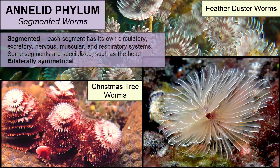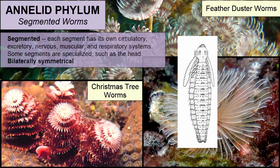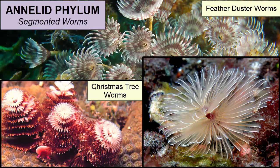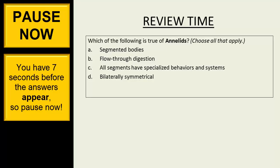The Annelida phylum also consists of segmented, bilaterally symmetrical organisms. In these worms, each segment has its own circulatory, excretory, nervous, muscular, and respiratory systems. Some segments are specialized, such as the head. There are 5,400 species in the oceans, including most tube worms and the feather duster worm.